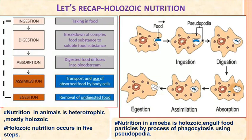Let's recap what we studied in the previous class. We studied about holozoic nutrition — there were five major steps: ingestion, digestion, absorption, assimilation, and egestion. Nutrition in Amoeba was also holozoic in nature, and it engulfs food particles by the process of phagocytosis using pseudopodia.